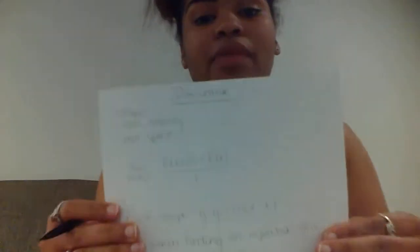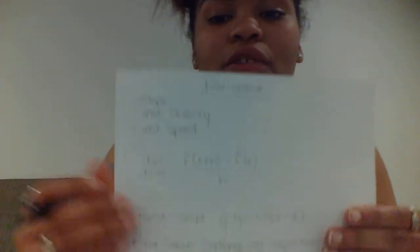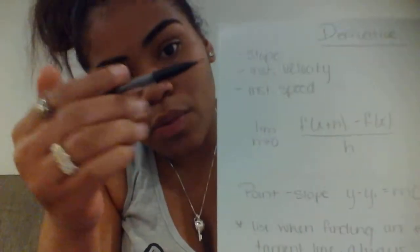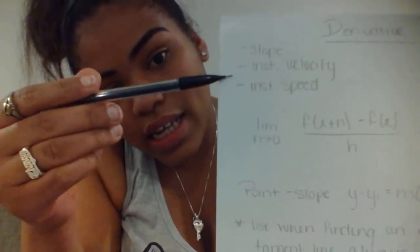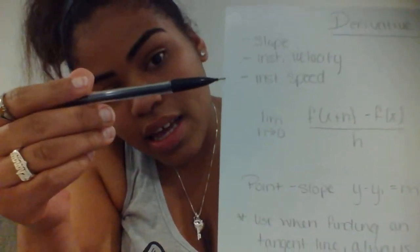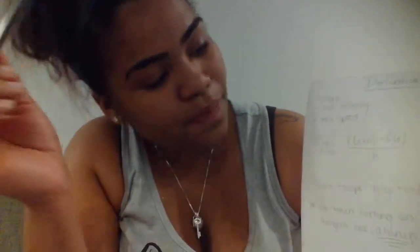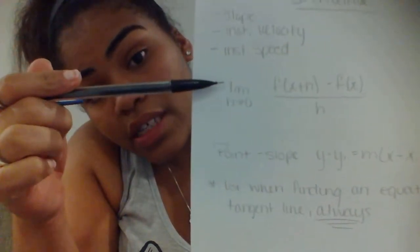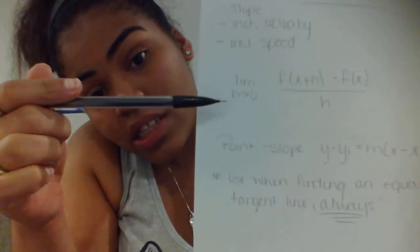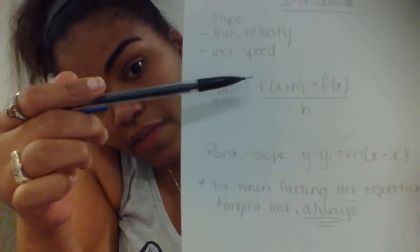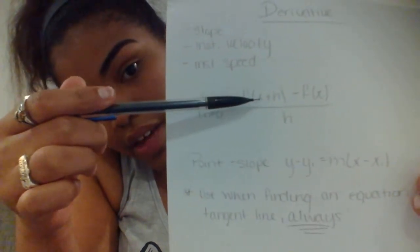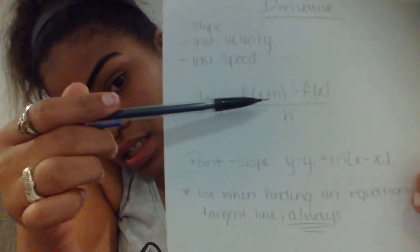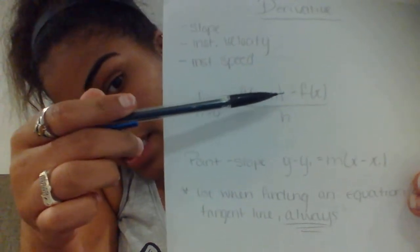So first we have derivatives. The derivative is also known as a slope, instantaneous velocity, and instantaneous speed. The definition of a derivative is the limit as h approaches zero of the function f times the quantity of x plus h, minus f times x, divided by h.